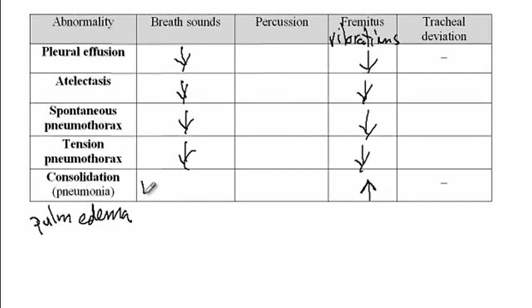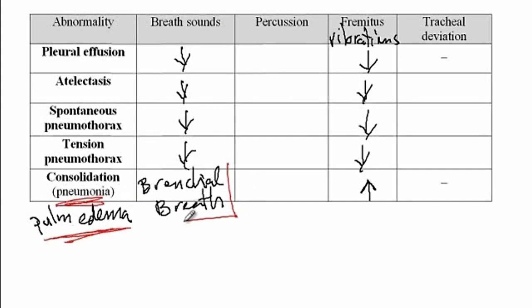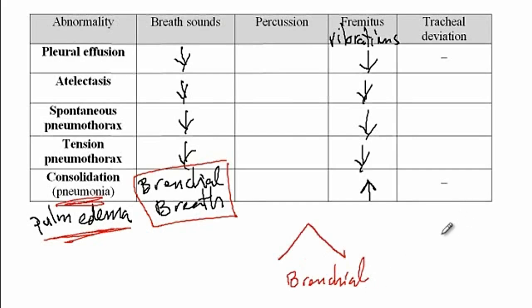Another term you need to be familiar with is bronchial breath sounds. Conditions that cause consolidation of the lungs, like pneumonia or pulmonary edema, cause bronchial breath sounds on auscultation. When listening over the bronchia in the second or third intercostal space, you hear inspiration and then expiration, with the duration of inspiration and expiration being equal — this is referred to as bronchial breath sounds.